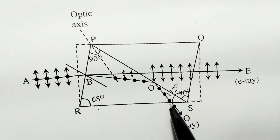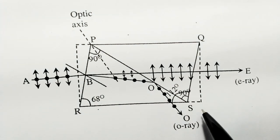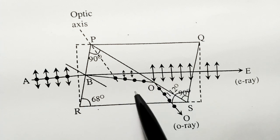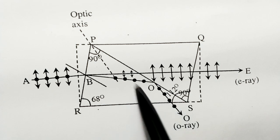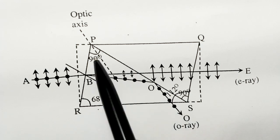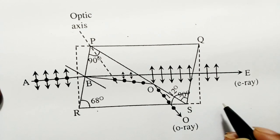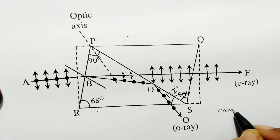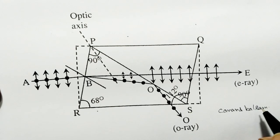The cut is made perpendicular to the principal section as well as the end faces PR and QS. The cut faces are ground and polished optically flat, then cemented together with Canada balsam.